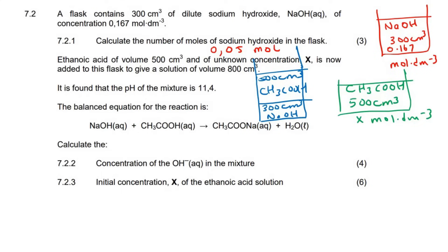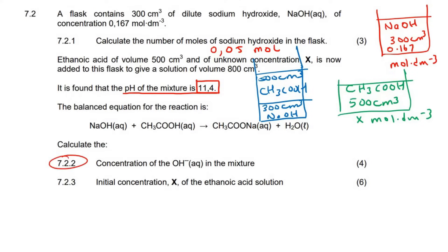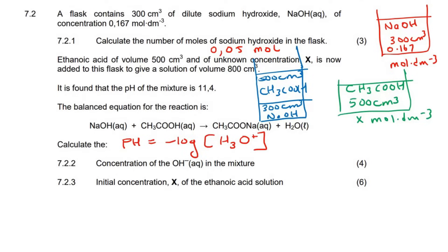It is found that the pH of the mixture is 11.4. The first sub-question asks us to calculate the concentration of OH⁻ in the mixture. We know that pH = -log[H₃O⁺], so we can say 11.4 = -log[H₃O⁺].